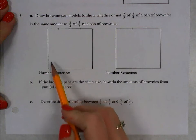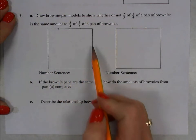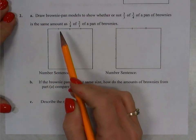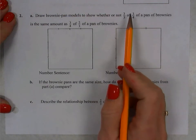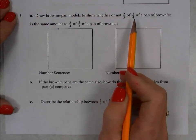So the first thing that we're going to do is we're going to start out with an area model so we can make sense of really what is this asking? What does two-thirds of three-fourths really mean?